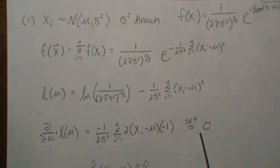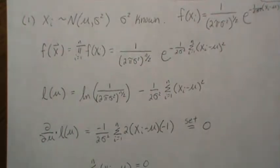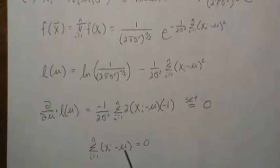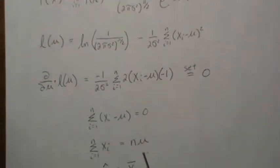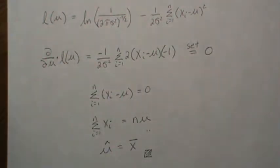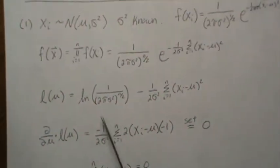We set the derivative equal to zero and solve for μ. The constants move to the other side, and when we distribute the sum we get the sum of the Xᵢ's minus n times μ. Taking that to the other side and dividing by n, we end up with μ̂ = X̄, the sample mean. This is the MLE for the normal case when the variance is known.